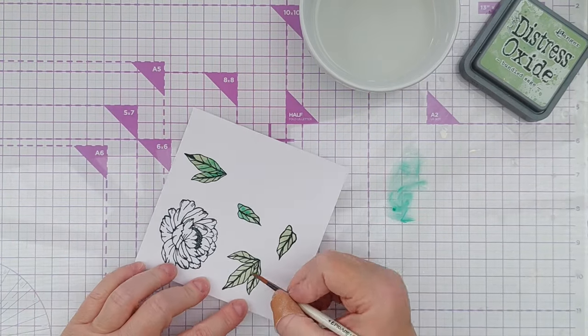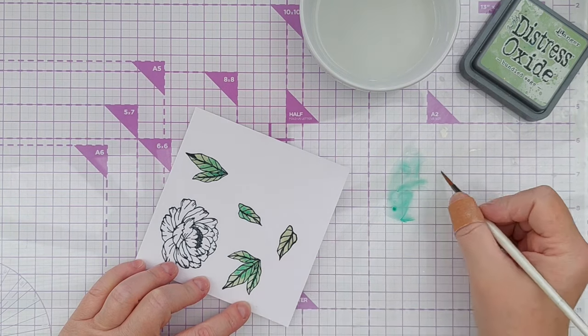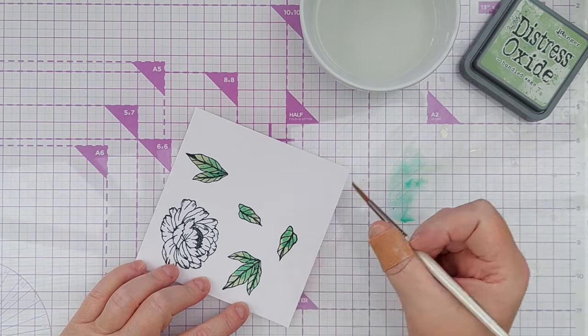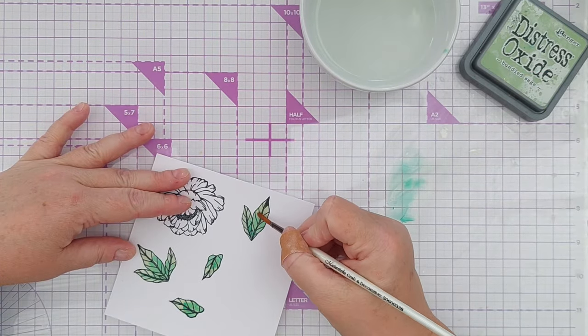I mixed it with water again and then painted it onto my leaves where the shadow areas would be, and then I just used some water to blend it out so now I've got a nice variegated leaf pattern.